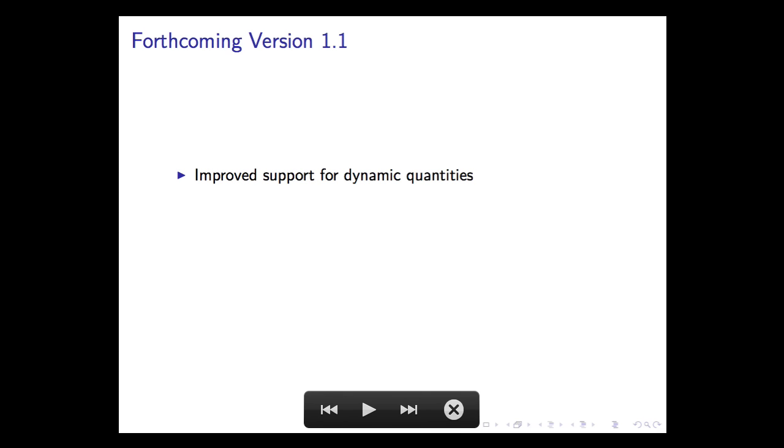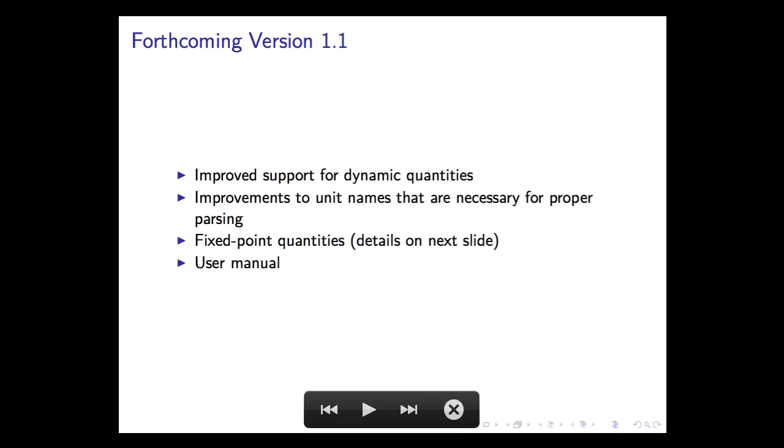Coming up we're going to have version 1.1 with even better support for dynamic quantities so that the parser that we're working on in the background can improve. We're going to have improvements to the unit name system that are needed for that too. And what's really exciting at least to me is we're going to have fixed point quantities so you can have things with underlying integer representations but still can use units other than the SI base units, whichever scale is appropriate for your application and have that all be tracked too. And we have a user manual which is good.